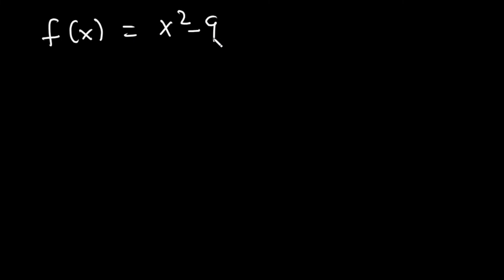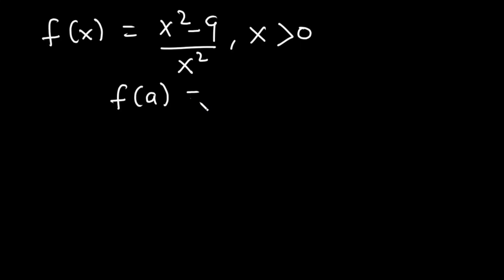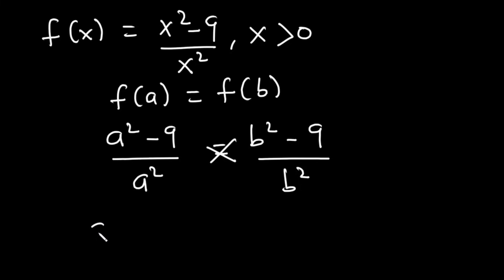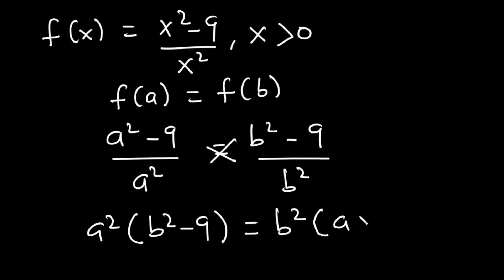Let's solve another example. How do we prove that f(x) = (x²−9)/x², where x > 0, is one-to-one? We set f(A) = f(B), giving us (A²−9)/A² = (B²−9)/B². Cross-multiplying: A²(B²−9) = B²(A²−9).